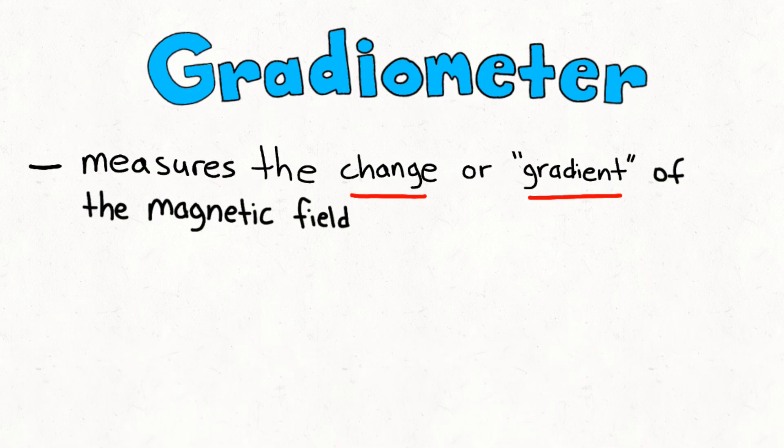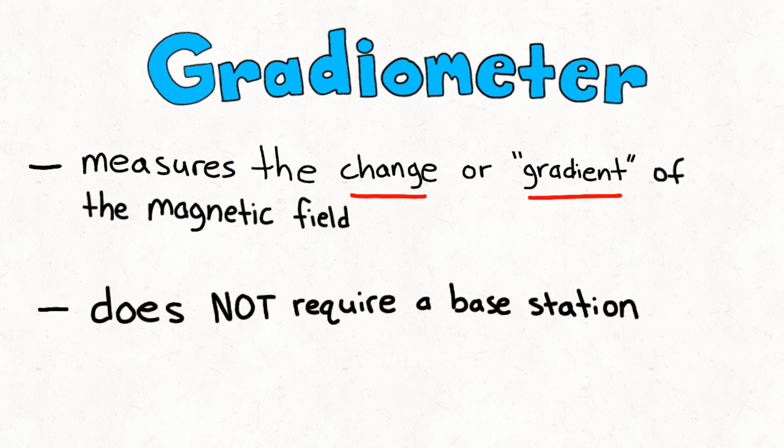In a gradiometer survey, the gradient or rate of change of the magnetic field is constantly being measured. This magnetic survey does not require a base station, as the variations of the magnetic field are constantly being recorded. If the processing results are good, the position of the magnetic anomalies is confirmed.